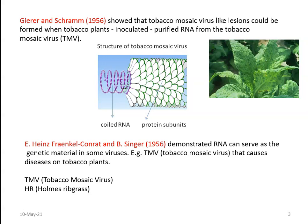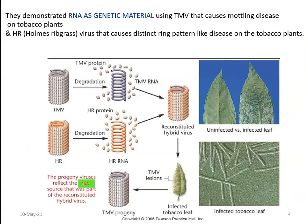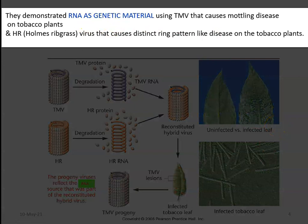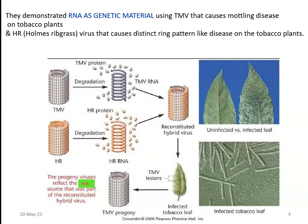They took tobacco mosaic virus and HR virus — Holmes ribgrass virus — two different viruses which cause some diseases on tobacco plants. With that they were able to prove that the genetic material is present only in the RNA. They demonstrated that RNA acts as a genetic material by using tobacco mosaic virus, which causes a mottling disease on tobacco plants, and HR virus, which causes a distinct ring pattern disease on tobacco plants. Two different viruses causing two different diseases were taken as a model to prove the nature of RNA as a genetic material.